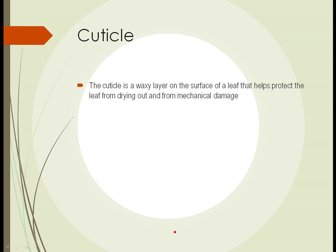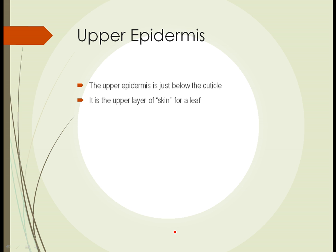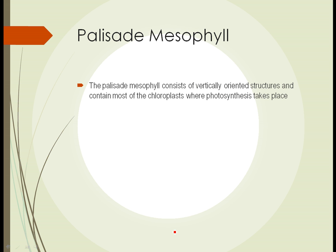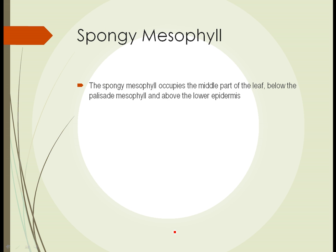The cuticle is a waxy layer over the surface of the leaf that helps protect it from drying out and somewhat from mechanical damage like insects or animals chewing on it, or leaves banging together in a windstorm. The upper epidermis — the outer skin layer — exists just below the cuticle. The palisade mesophyll consists of cells oriented vertically in cross-section and contains most of the chloroplasts where photosynthesis takes place.